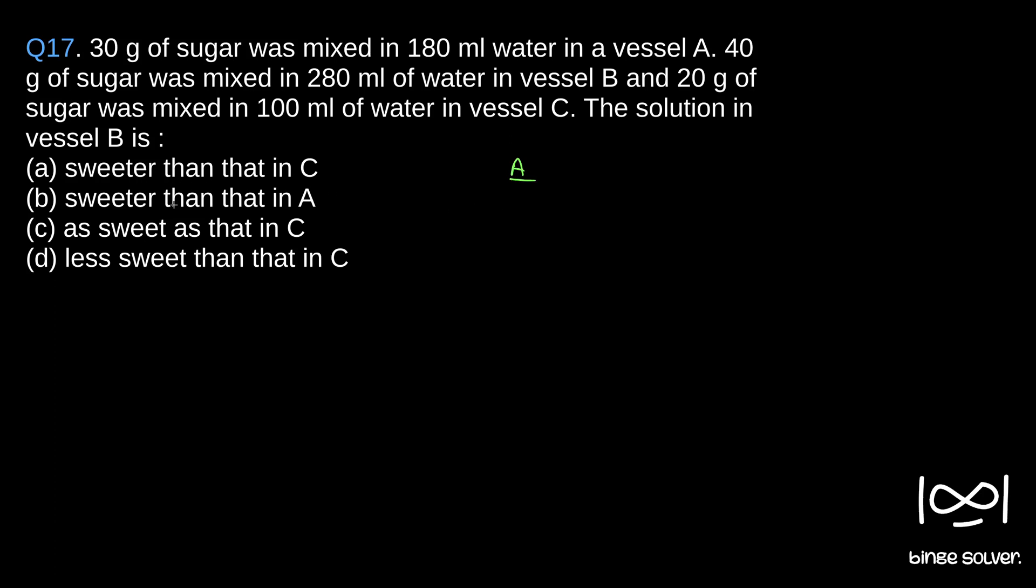We are comparing sweetness, so we need sugar per ml in each container. 30 grams of sugar was mixed in 180 ml, so per ml it has 30 by 180 grams of sugar. So 30 by 180 for A, and B is 40 by 280.